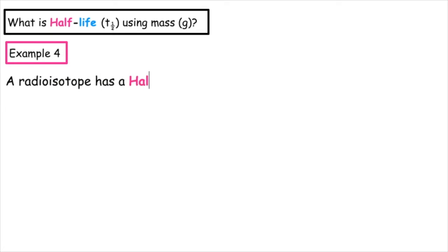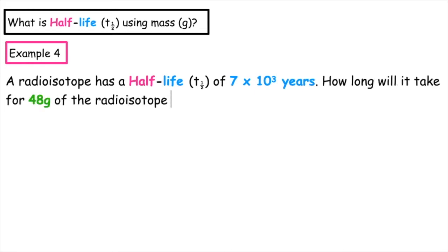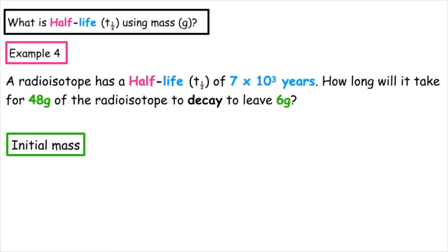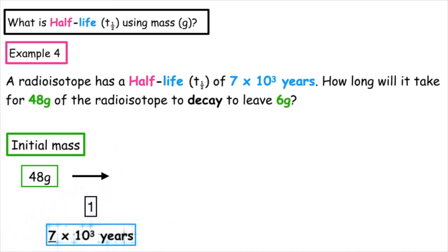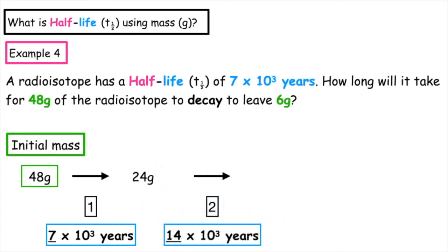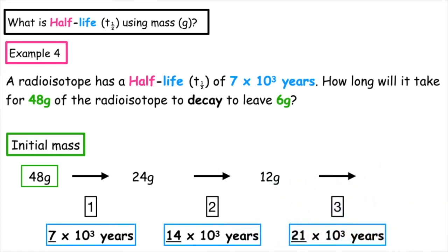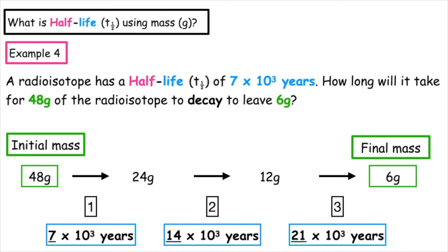This last example: a radioisotope has a half-life of 7×10³ years. How long will it take for 48 grams to decay to give 6 grams? We start with 48 grams. After one half-life (7×10³ years) we get 24 grams. After a second half-life (total 14×10³ years) we get 12 grams. After a third half-life (total 21×10³ years) we get our final mass of 6 grams. So the total time is 21×10³ years.